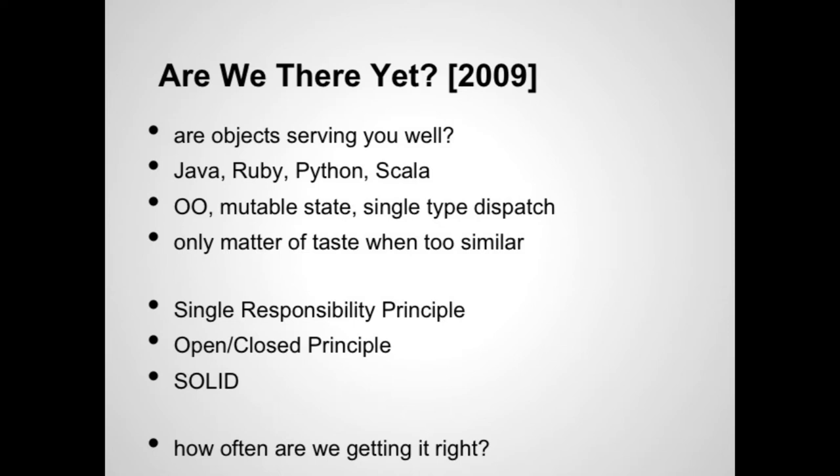So let's get into it. The talk was Are We There Yet? in 2009. He shows up at the JVM Language Summit and basically posits that are objects serving us as well as we hope they are? We have languages like Java, Ruby, Python, and Scala. We talk about how different they are, but really they're more similar than they are different. They're all OO, mutable state, single dispatch type languages. Differences between them are only a matter of taste when they're too similar. We need something very different.